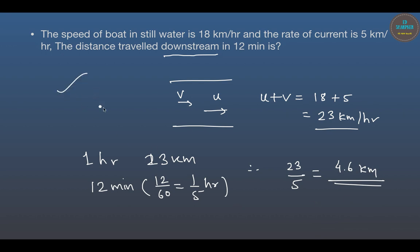This was a simple problem where we calculated the downstream velocity first and then calculated the distance traveled in a given time. It could have been upstream as well — we would have subtracted V from U, giving 13 kilometers per hour if the problem was designed that way.